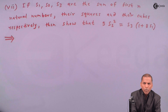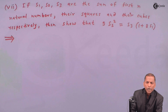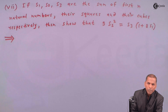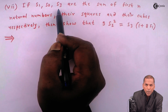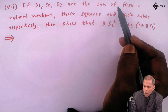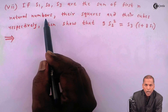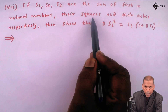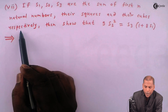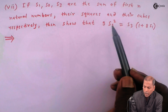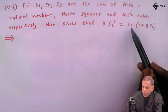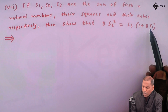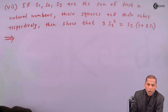Hello friends. Now we see problem one, sub-question seven, based on Theorem 1, Theorem 2, and Theorem 3 of the chapter on Sequences and Series. The sub-question seven is: if S1, S2, S3 are the sums of the first n natural numbers, their squares, and their cubes respectively, then we have to show that 9·(S2)² = S3·(1 + 8S1).